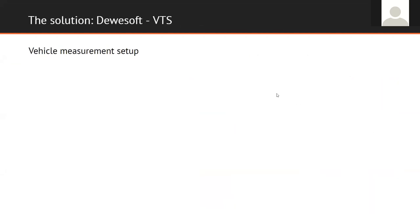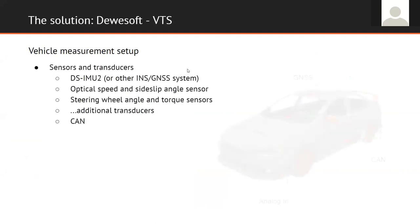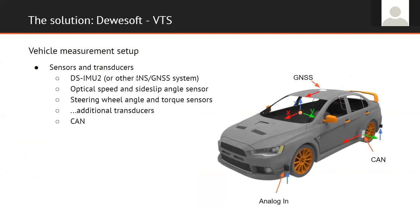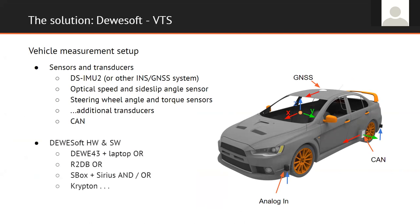The overall system setup includes transducers like IMU, GNSS system, optical sensors, steering wheel angle and torque sensor, etc., from many data sources — analog, CAN, whatever. This is managed by Devisoft hardware and software. We may have several configurations, like Devisoft 3, which is the basic, or R2DB or SBOX plus series modules, or Krypton or others. These data collected by the system are processed by the vehicle dynamics plugin, which satisfies requirement number one.